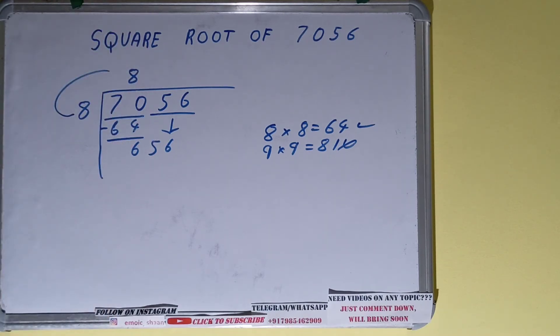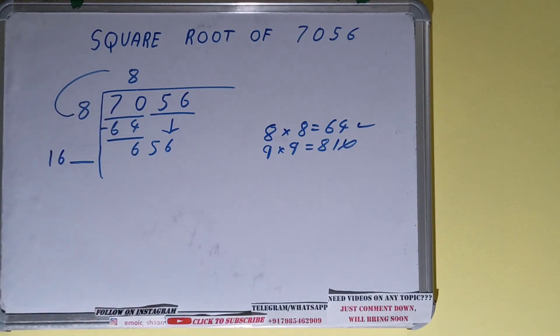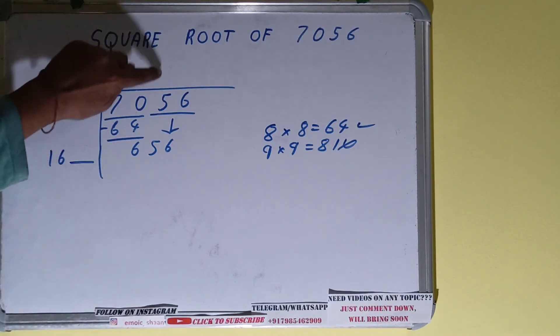So do 8 plus 8. It will be 16. Keep one digit extra. Okay, now whatever number we place here, we have to place it here also.